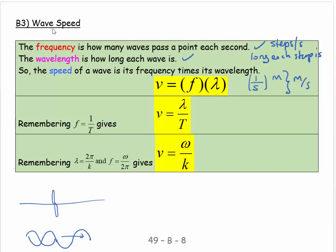I can also say that if V equals F lambda, I can say that V is equal to omega over two pi, and I can say that lambda equals two pi over K. So this would equal omega over K.